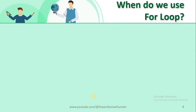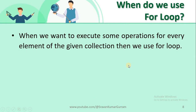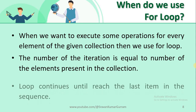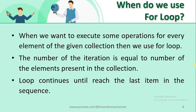When do we use a for loop? This is a very important point. When we want to execute some operations for every element of a given collection, we use the for loop. The number of iterations in a for loop is equal to the number of elements present in the collection. For example, if the collection has three elements, the for loop executes three times. Whenever the loop reaches the last element, that is the last iteration.